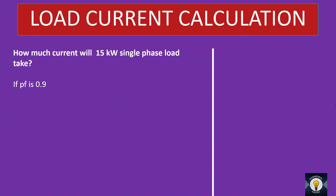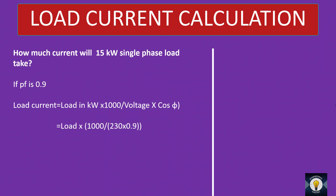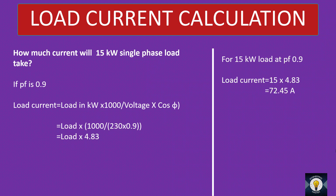If the power factor is 0.9, the equation becomes load current equals load in kW into 1000 divided by voltage into cos φ — that is load into 1000 divided by 230 into 0.9 — giving load into 4.83. For 15 kW at power factor 0.9, the load current is 15 into 4.83, which is 72.45 A. For 15 kW at 0.8 power factor, the load current is 15 into 5.43, that is 81.45 A.